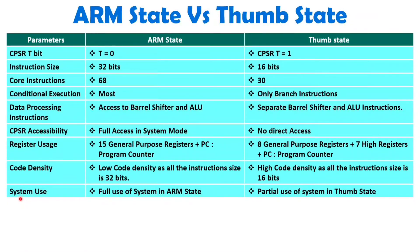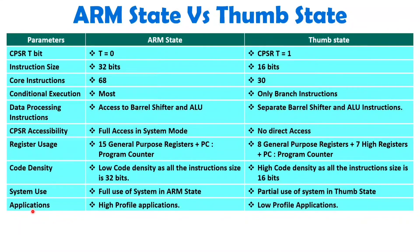When we talk about system use, full system use is available with ARM state, while only partial system use is available with Thumb state. ARM state accesses the system at full capacity, so high-profile applications use ARM state. For low-profile applications, the user can invoke Thumb state by making the T bit equal to 1.